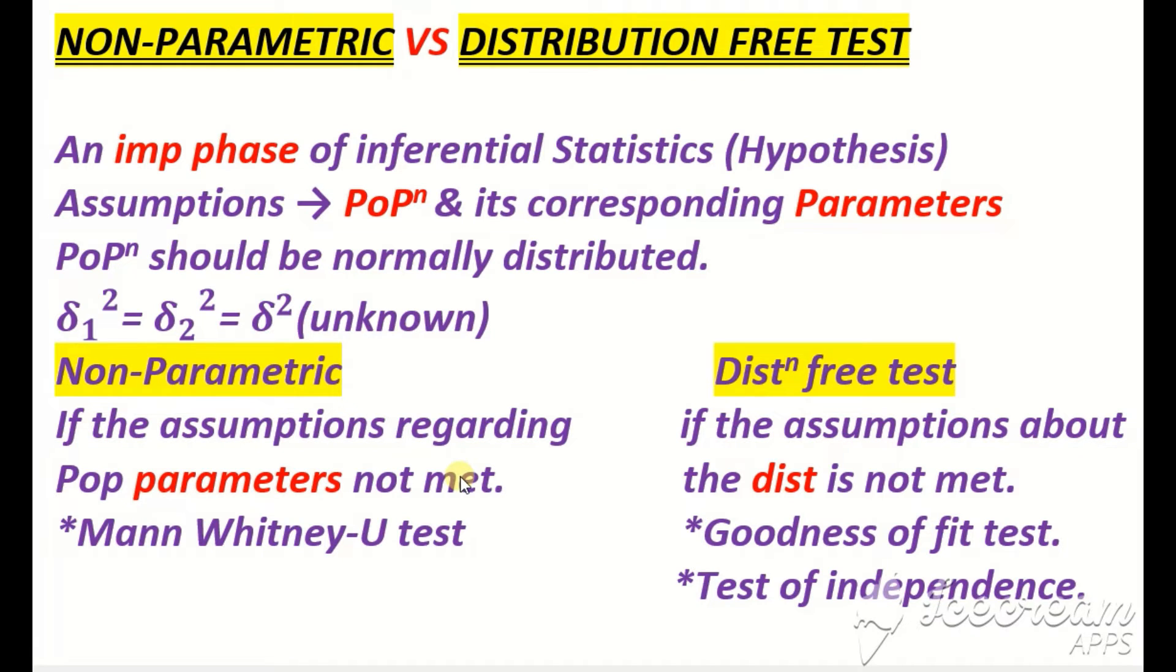For example, we also use Mann-Whitney U test when the two sample t-test assumptions fail. So we call it non-parametric test. The normality assumption also definitely fails here, so we can call it non-parametric test or distribution free test as well.